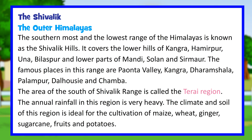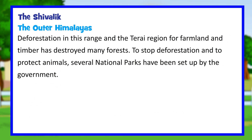The Shivalik, or Outer Himalayas, is the southernmost and lowest range of the Himalayas. It covers the lower hills of Kangra, Hamirpur, Una, Bilaspur, and lower parts of Mandi, Solan, and Sirmour. Famous places in this range include Paonta Valley, Kangra, Dharamshala, Palampur, Dalhousie, and Chamba. The area to the south of the Shivalik range is called the Tarai region, which receives very heavy annual rainfall. The climate and soil there are ideal for cultivating maize, wheat, ginger, sugarcane, fruits, and potatoes. Deforestation in this range for farmland and timber has destroyed many forests.